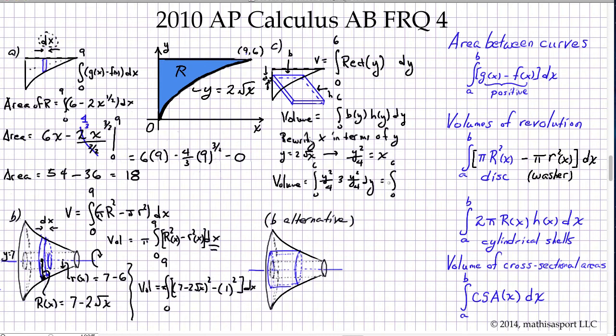So our final integral can be written as the integral from 0 to 6. I'm just going to create a little more space here. Our final integral, simplifying, we get a 4 here, a 4 here, a 3 here, so we're going to write 3 sixteenths y to the 4th dy. That's the whole problem.